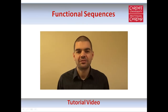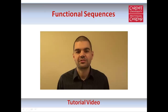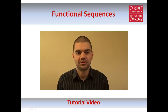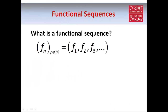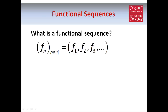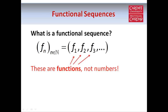After that review of sequences of numbers, it's time to move on to sequences of functions. A functional sequence is an infinite list of functions, which we call f_1, f_2, and so on. Each element of our sequence is a function rather than a number, so it has a certain argument — in other words, an input to the function — which might be referred to as x, for example.